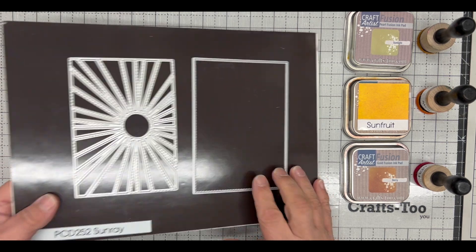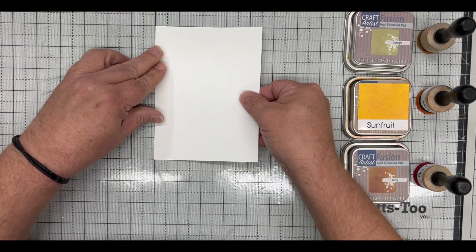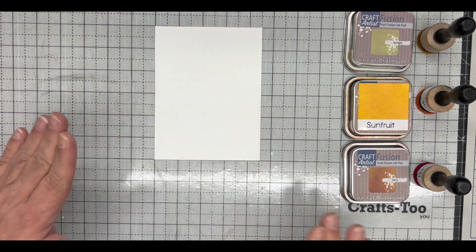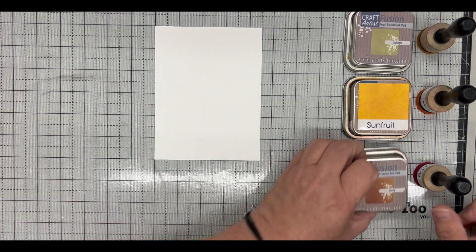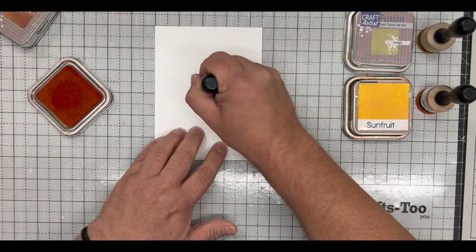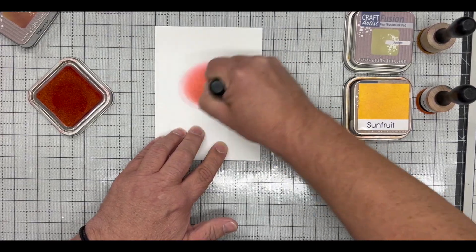I'm going to start with a piece of coconut white card that I've simply cut down to four and three quarters by six and a quarter inches. It's a nice simple size. I'm using this Gold Fusion range. I'm starting with berry because we're doing a sunrise, putting a circle of that heavily into the center.